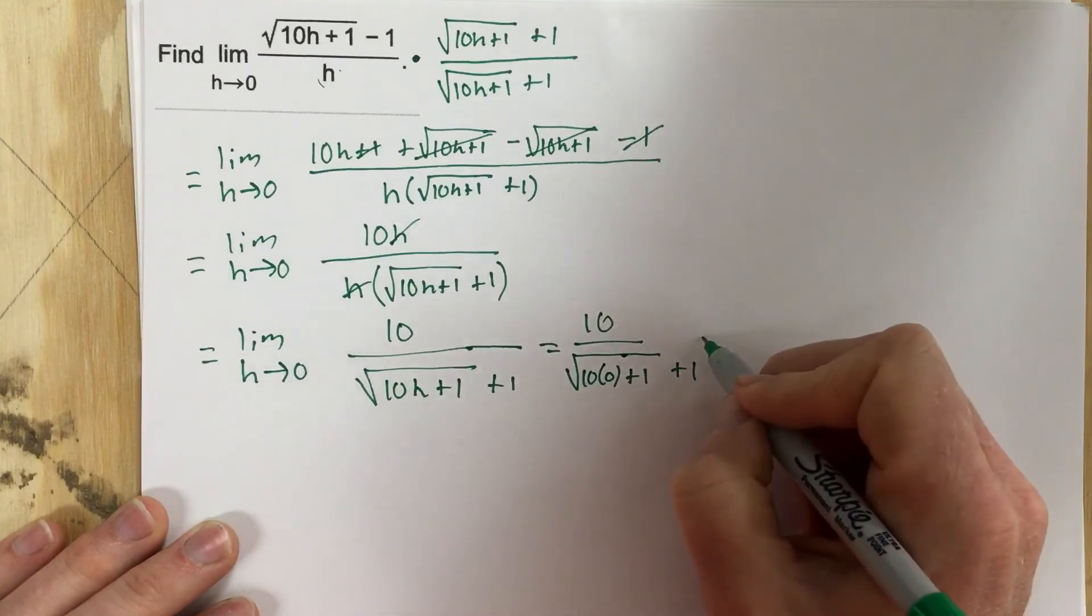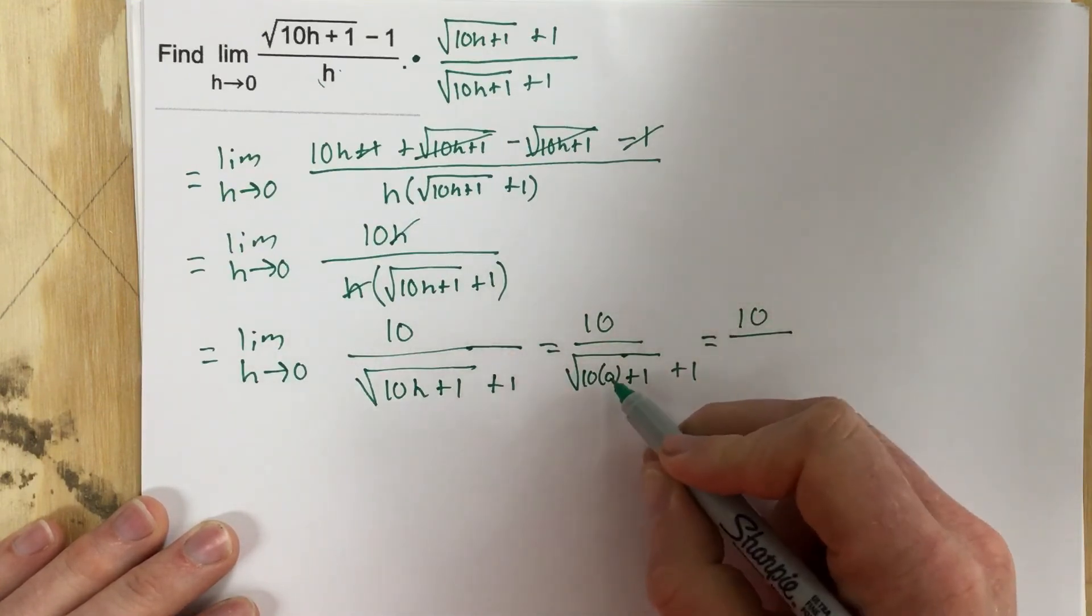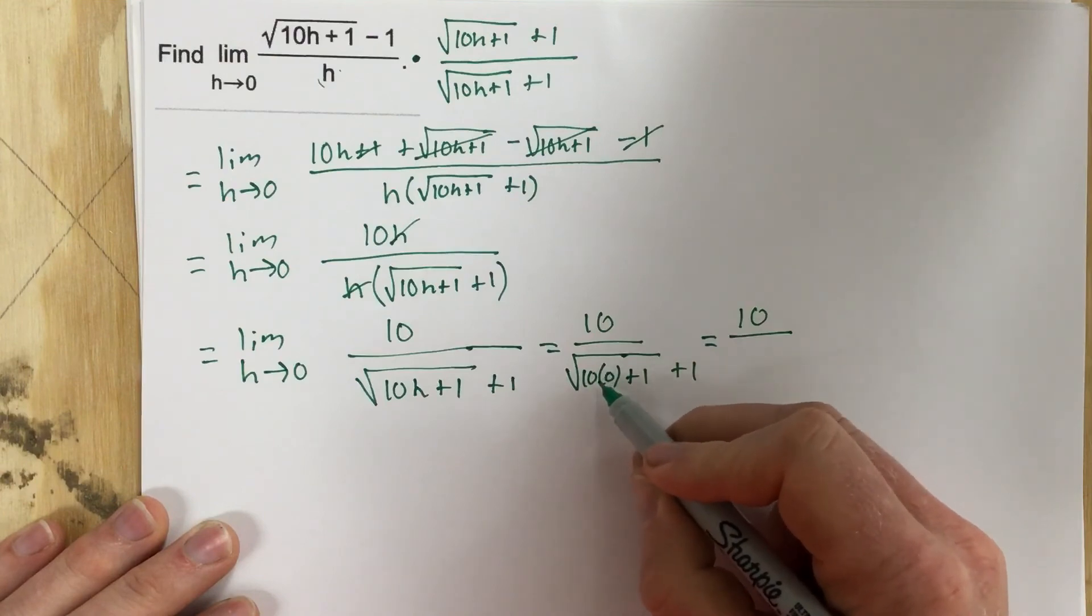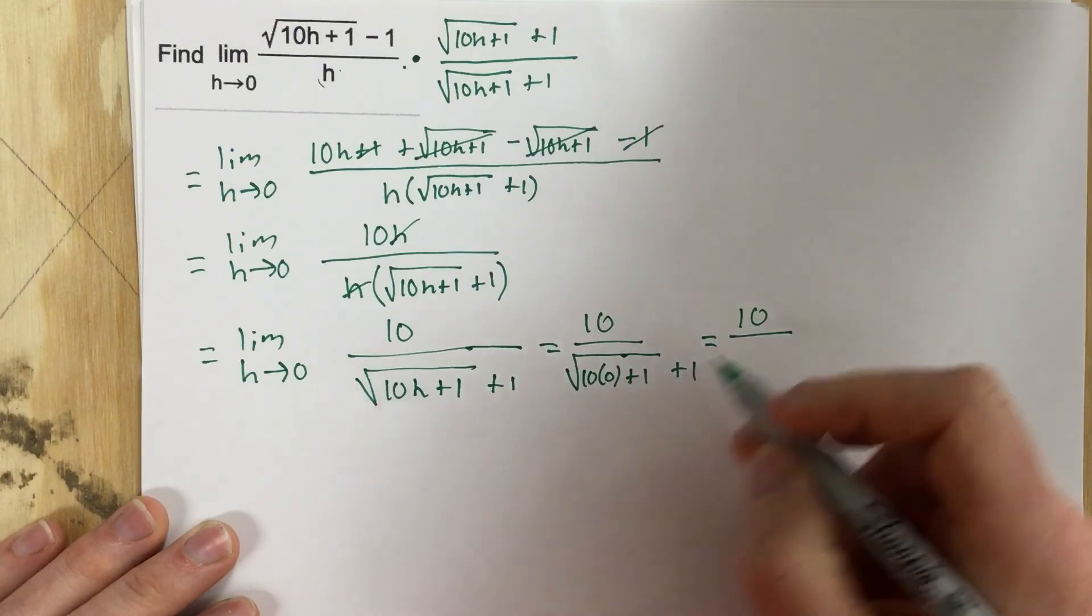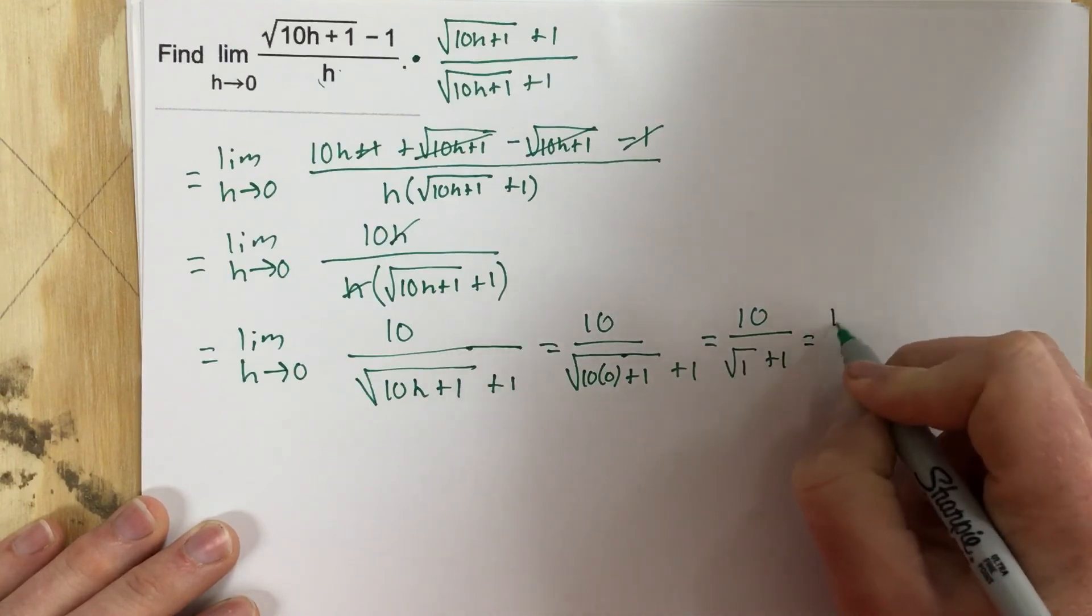And this will give me 10 over, when I multiply this by 0, that's 0 plus 1, which is 1. So I get root 1 plus 1. So I end up with 10 over 1 plus 1, which is 2.